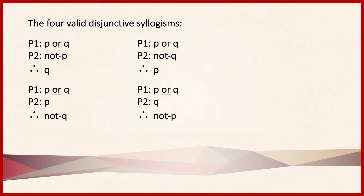Summing up, we have four valid disjunctive syllogisms. Any other combination of premises and conclusions will be invalid. The validity of disjunctive syllogisms is quite straightforward. The only time they become tricky is when the second premise affirms one of the disjuncts — that's when you need to be attentive to whether the disjunctive proposition is inclusive or exclusive. So long as you're careful about that, you should have no problems at all.